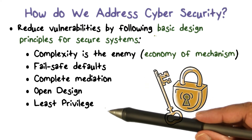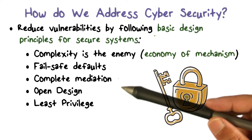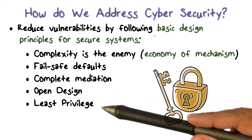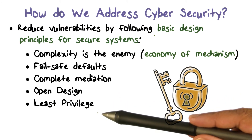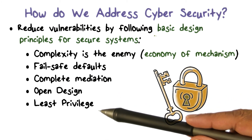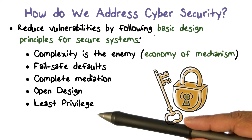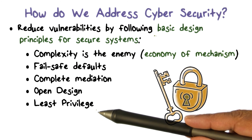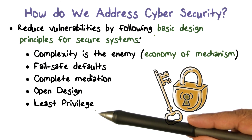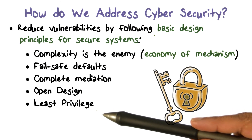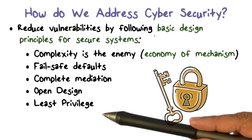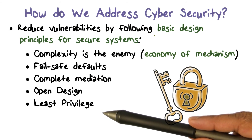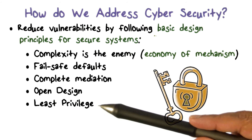An extremely important design principle is what's called least privilege. In systems, when you're running an application or program, you have the privilege to access a set of resources. Least privilege says you should only have privileges for resources that you absolutely need and nothing more. It's a damage containment idea — if something goes wrong, the harm is limited to only the resources for which you hold privileges.